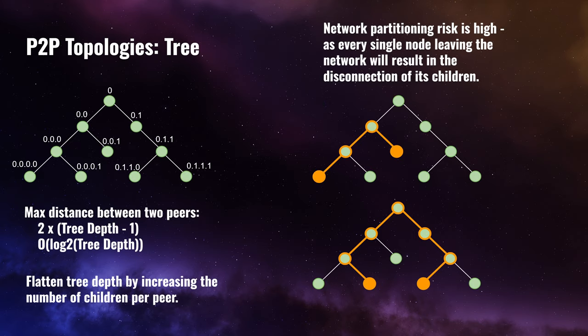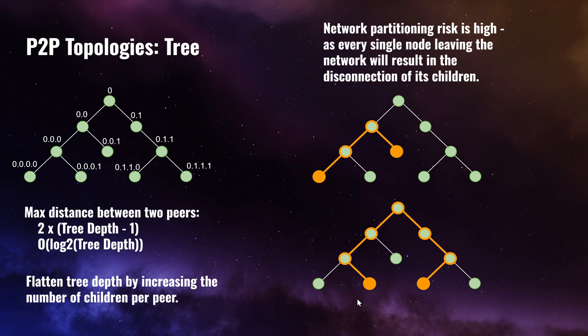The tree peer-to-peer topology offers a simple way to structure nodes in a peer-to-peer network that provides quite good routing characteristics. The maximum distance between two peers in a tree is (tree depth minus one) times two. For instance, if the tree depth is four, then tree depth minus one is three, and the maximum distance is three times two, which is six. You can verify this by counting the hops between the two most distant leaf nodes.